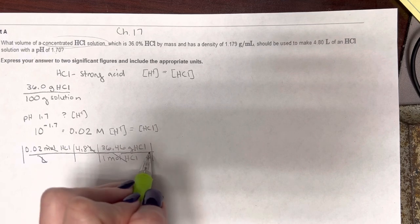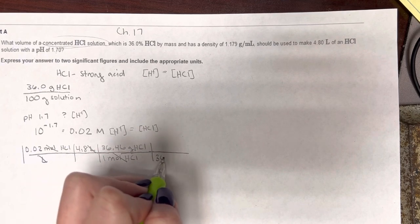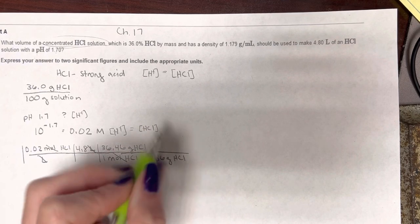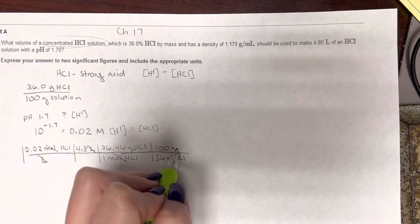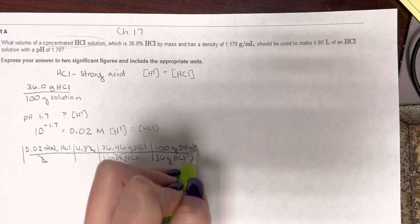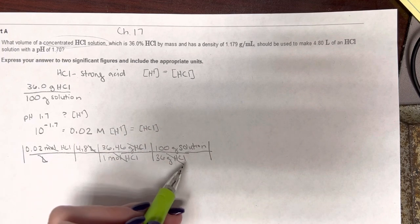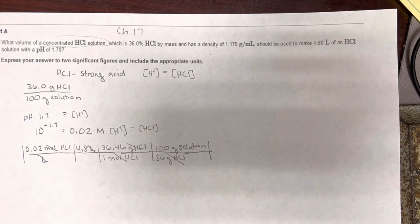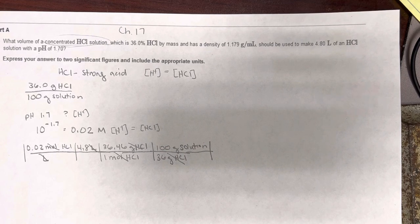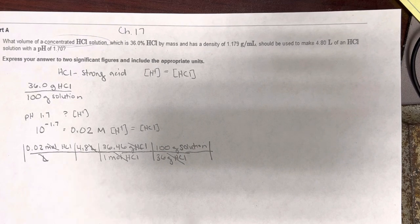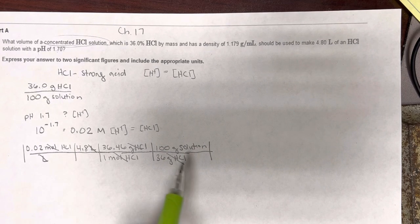So let's deal with this. There are 36 grams of HCl in 100 grams of the solution. Remember, when you're doing these concentrations, you have to make sure you're differentiating solute, solvent, and solution. Those definitions are still important.